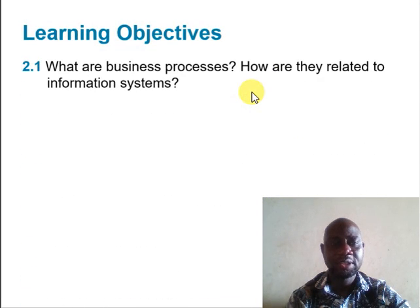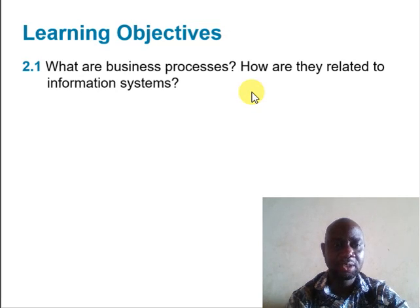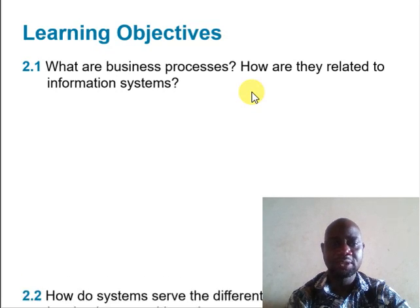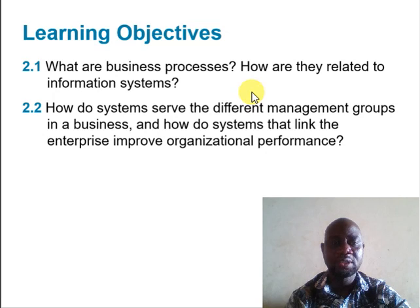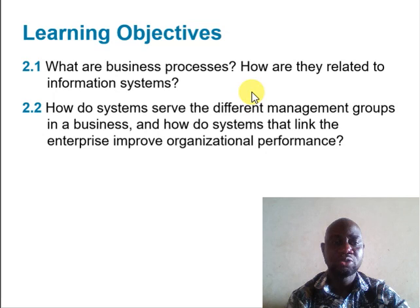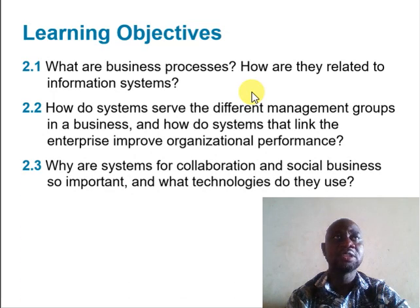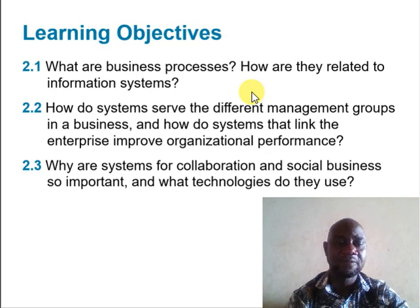In this lecture we'll be interested in understanding what business processes are and how business processes are related to information systems. We'll try to see how information systems can be employed to improve or change business processes. We also look at how systems serve the different management groups in an organization and how systems link the enterprise to improve organizational performance. We'll look at the hierarchy in an organization — the top level management, the middle level management, and the operational level staff — and how information systems serve all these different management levels.